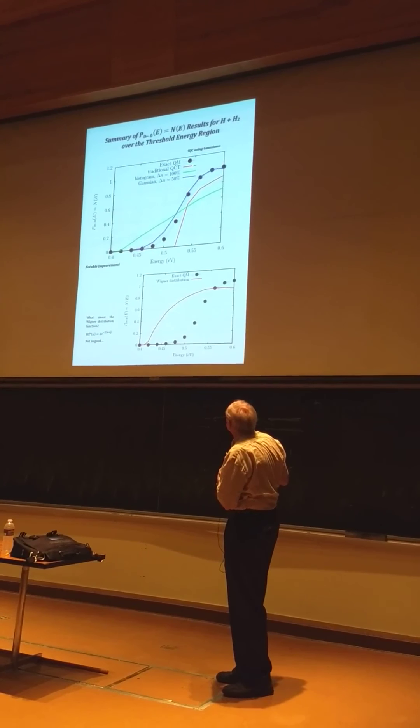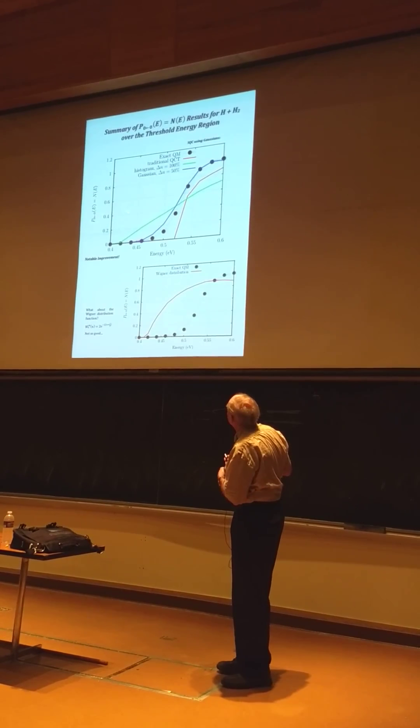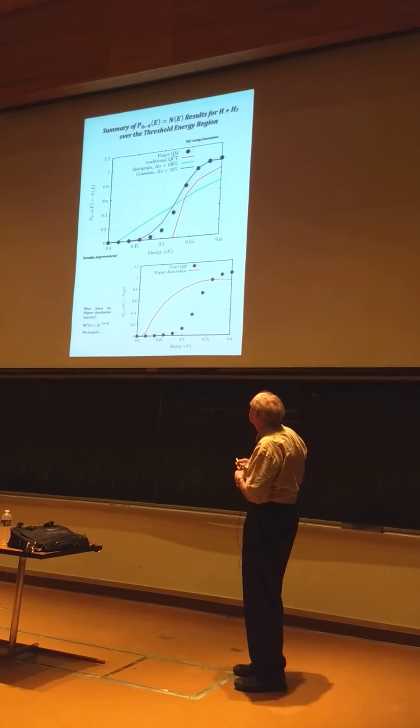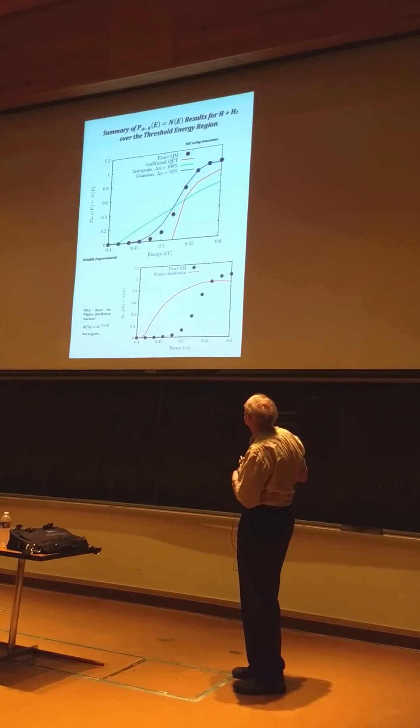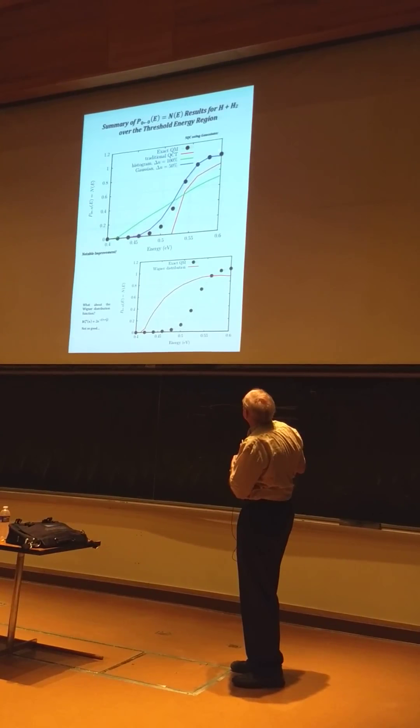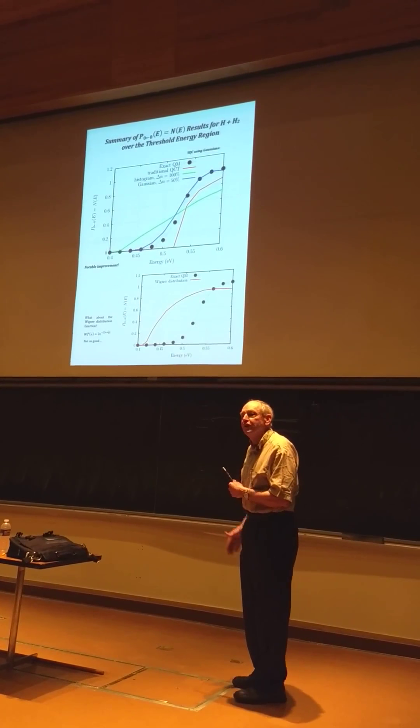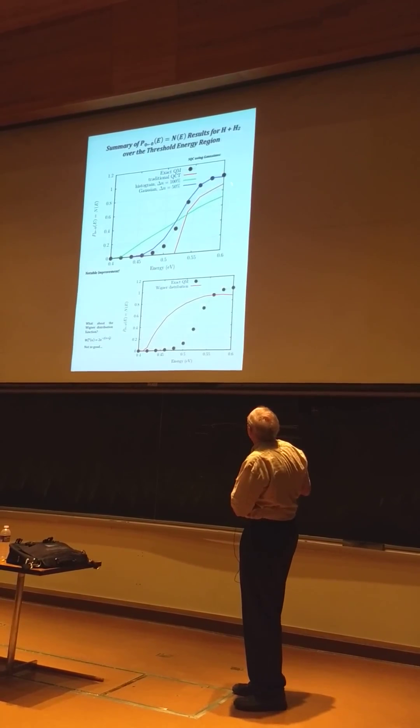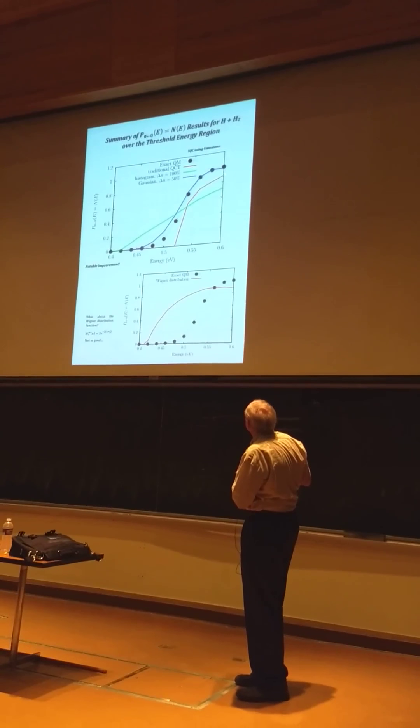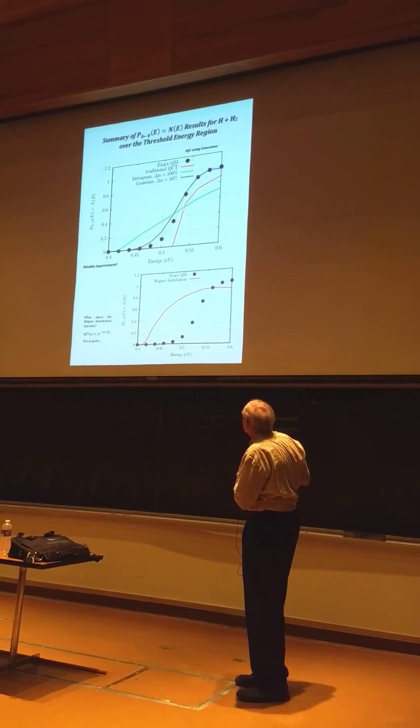Reaction probability versus energy. The points are the quantum results, which you can generate on your iPhone now. I'll probably find it. The old unsymmetrical classical Langer and Karplus, that's the red curve, and it's qualitatively correct.